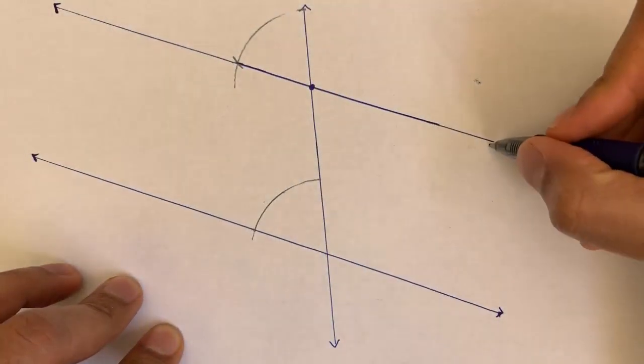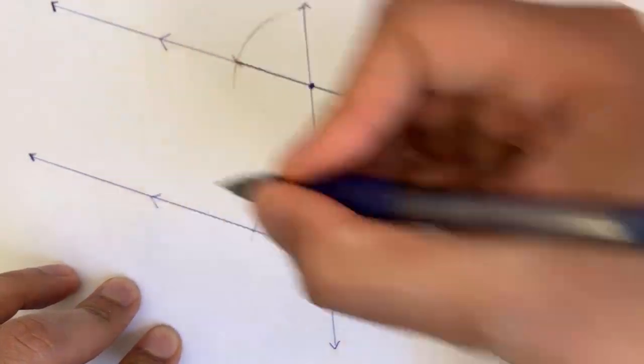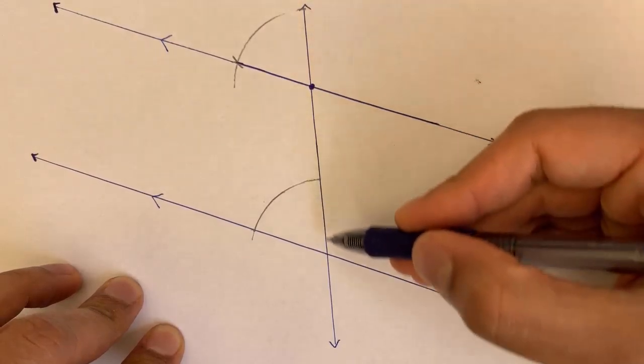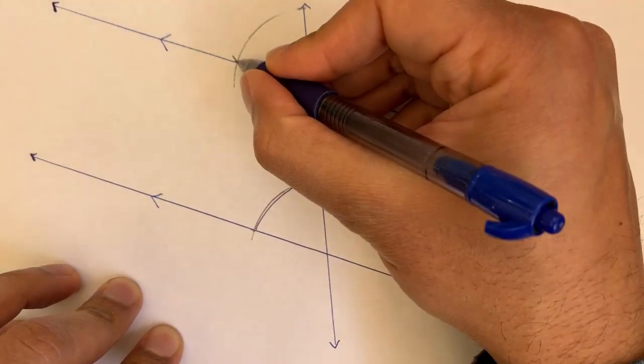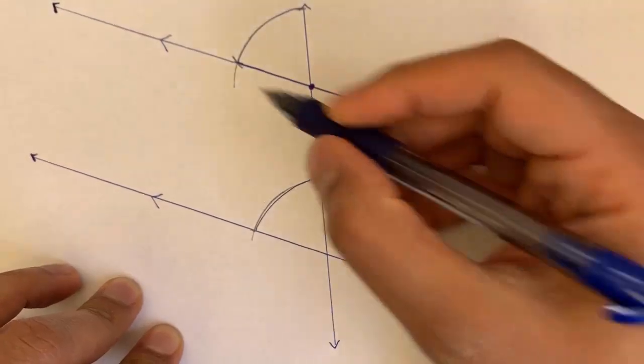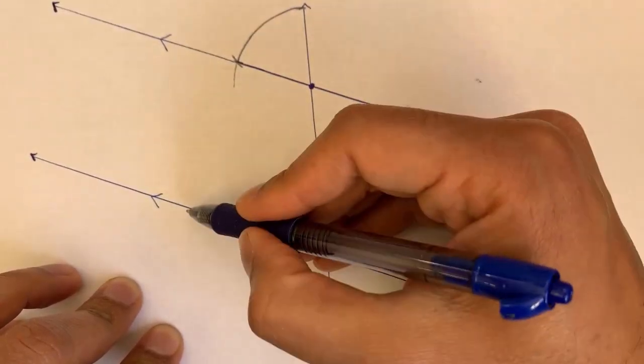And once again, how do I know that this line is parallel to this line? Because we have a transversal that intersects both of them. And these two angles, which are corresponding angles, are congruent. So these two lines must be parallel.